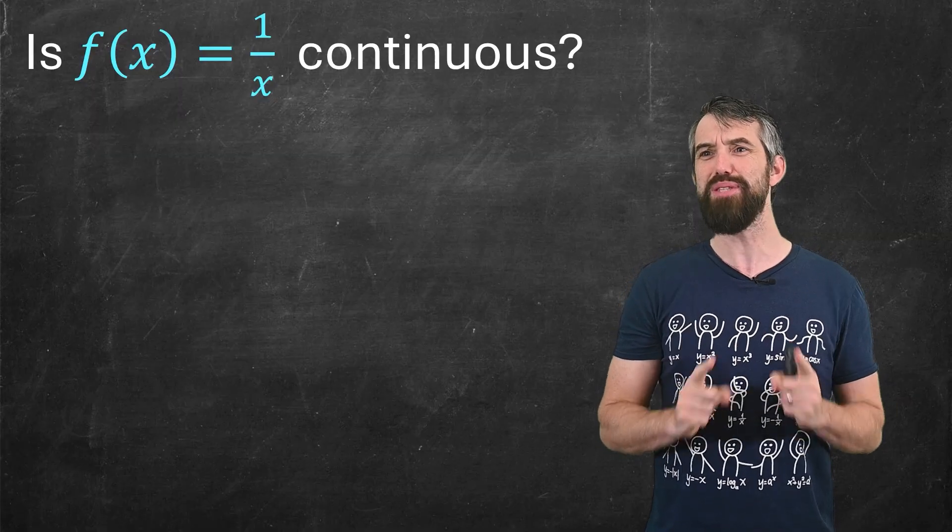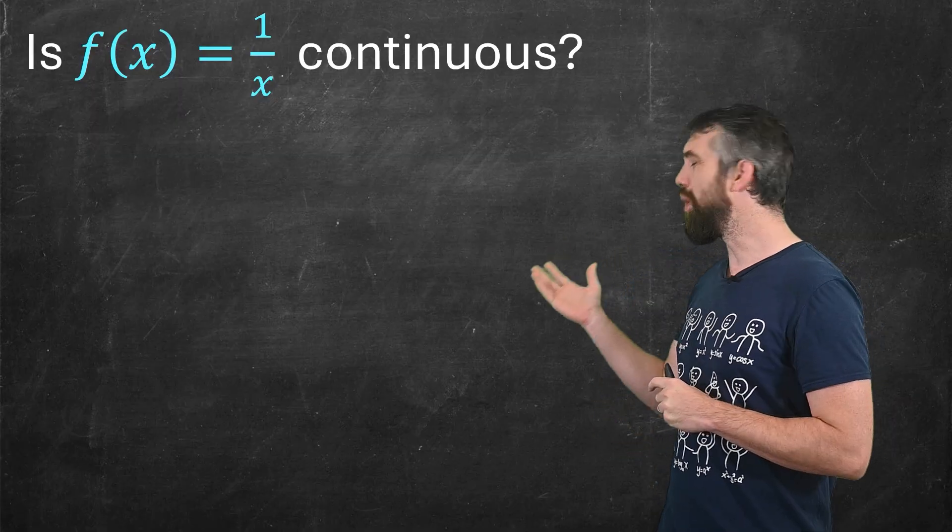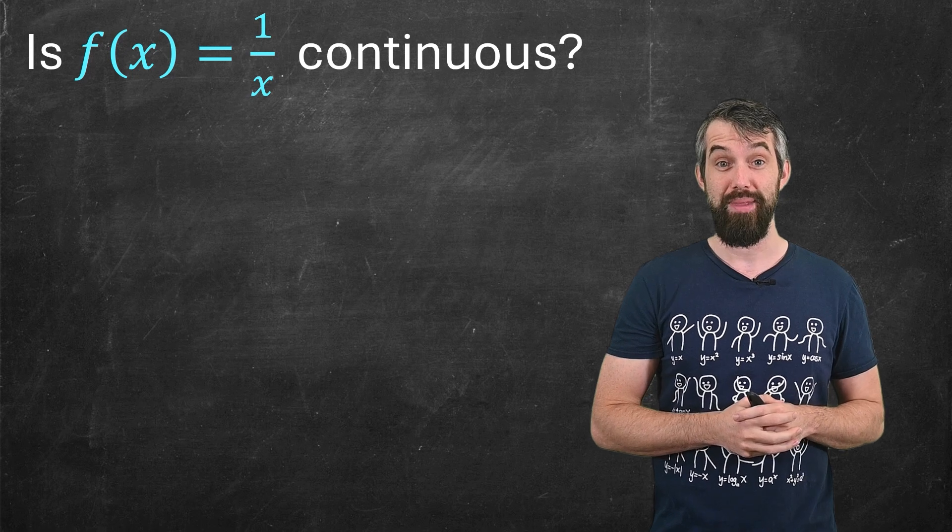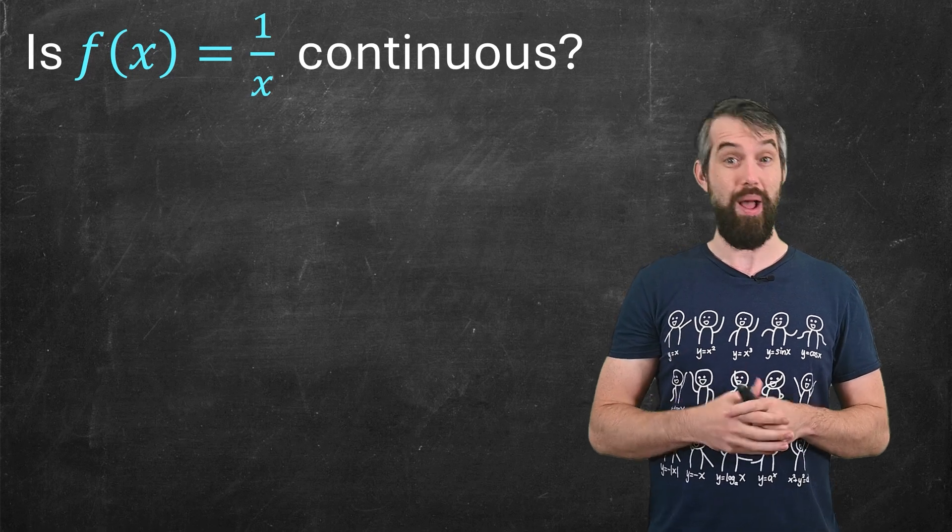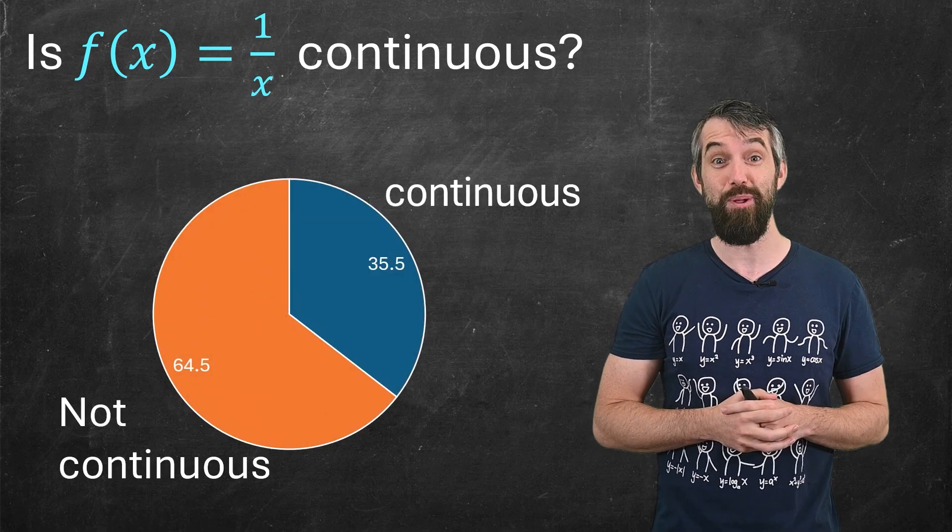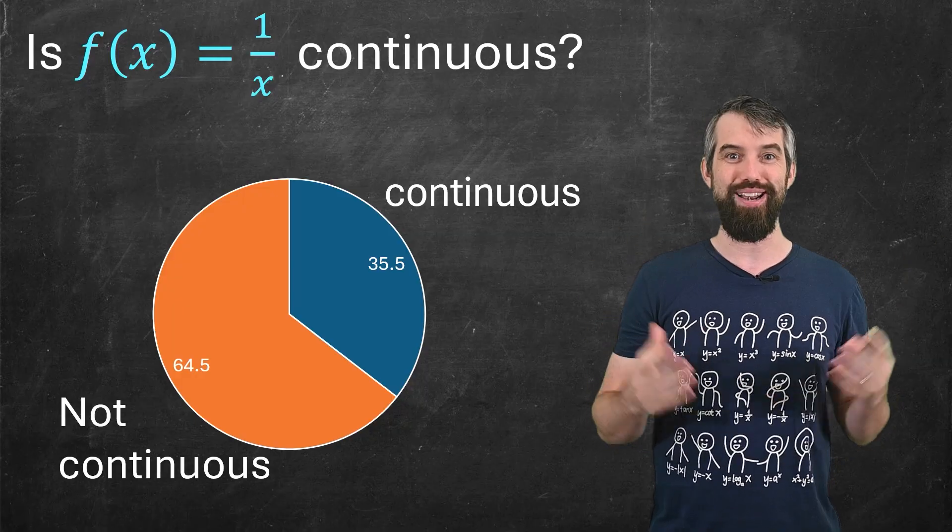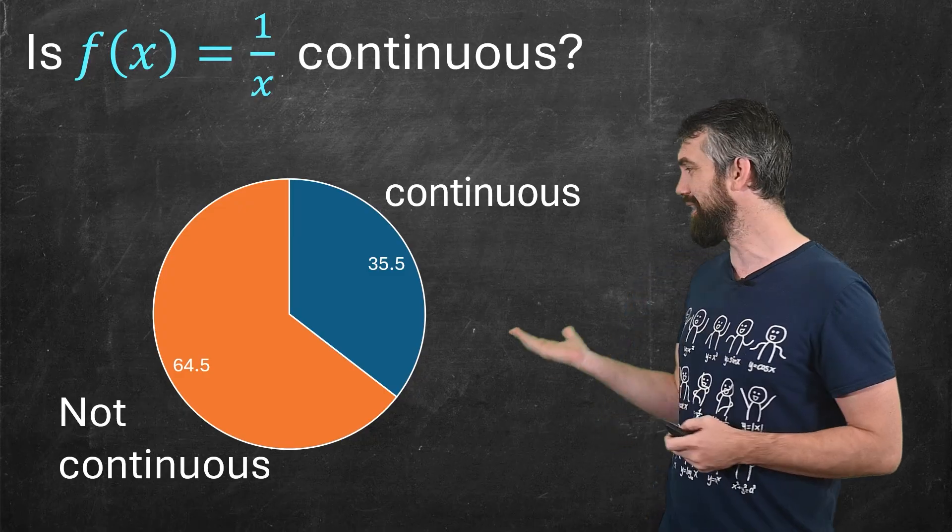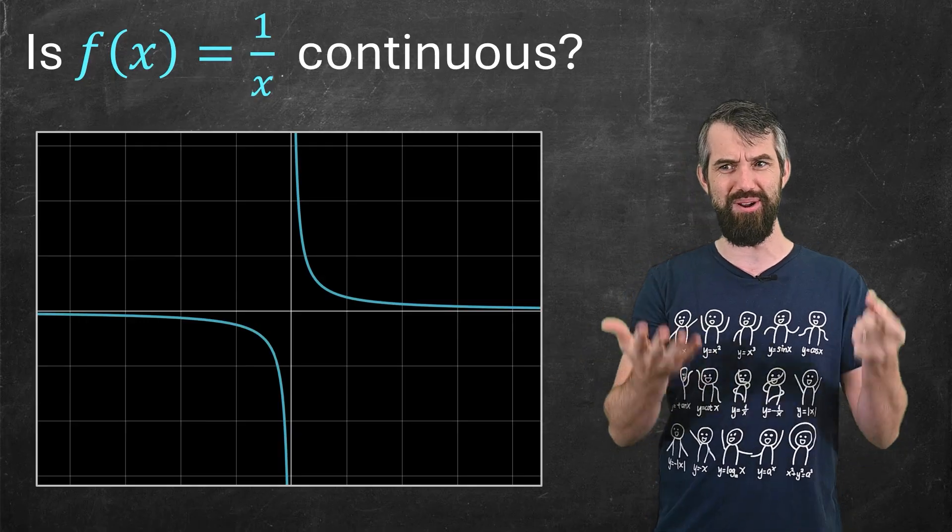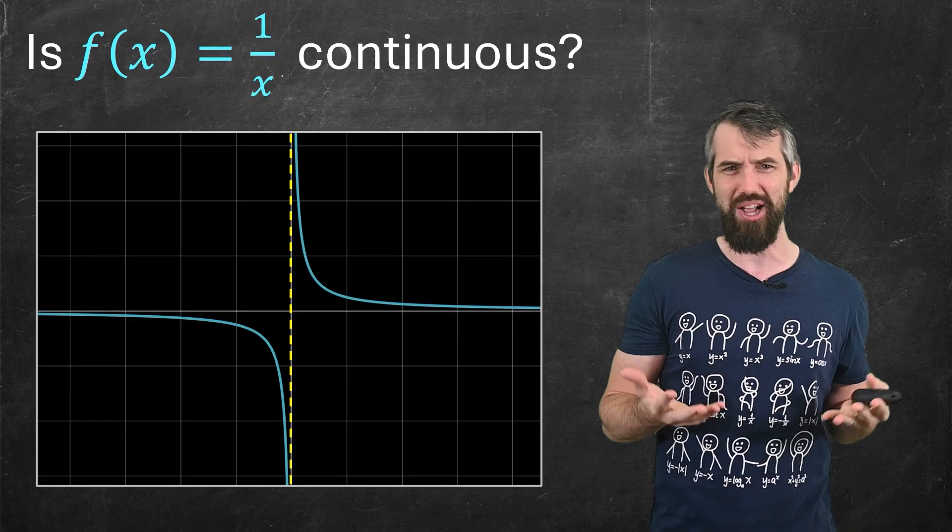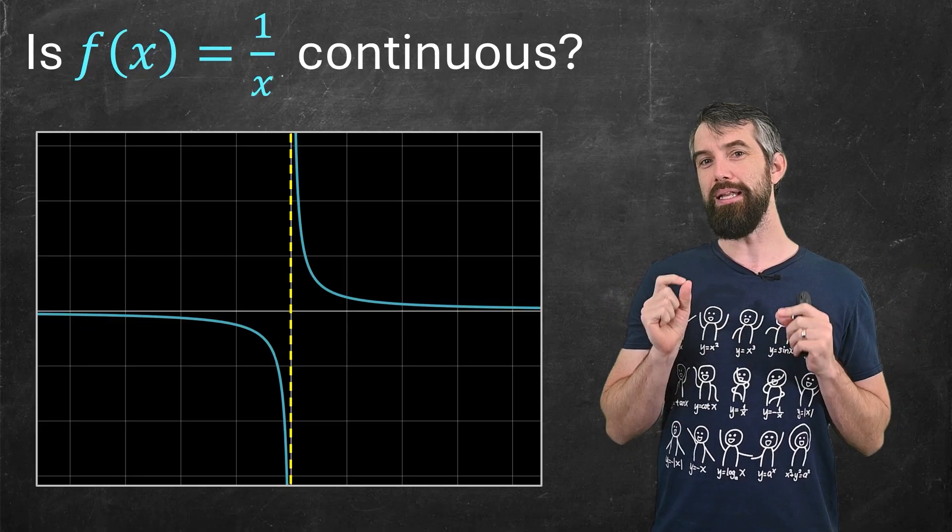This one might really mess with your mind. Is the function 1 over x continuous? And it turns out that about a third of people think the answer to that is yes. So the case for not-continuous may be obvious, just look at the graph, it's got a vertical asymptote, right? That's not continuous, duh. But let's be a bit more careful.